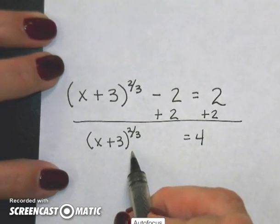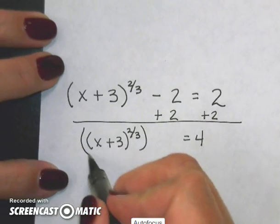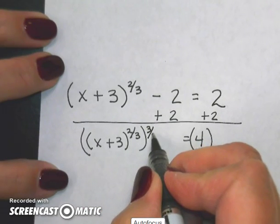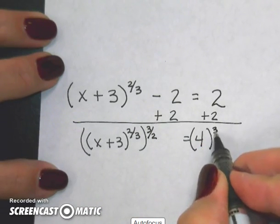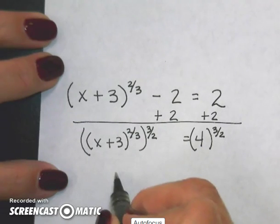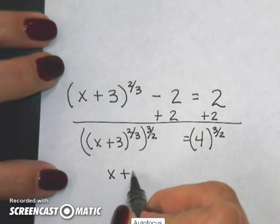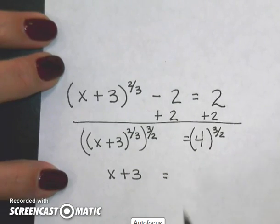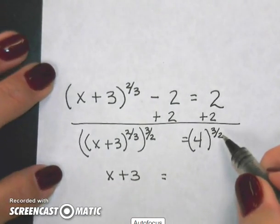Well, to get rid of my power, I'm going to use its reciprocal, which would be 3 over 2. Again, whatever I do to the left, I have to do to the right. So I get x plus 3, because this cancels each other out, is equal to 4 to the 3 halves power.